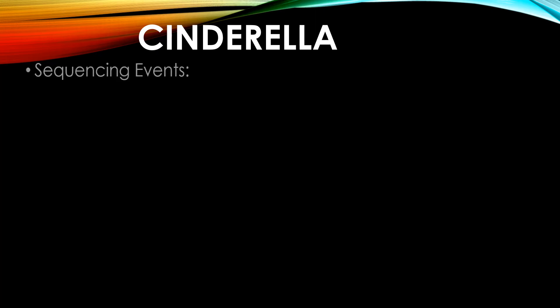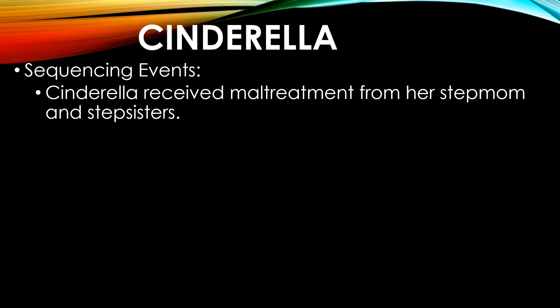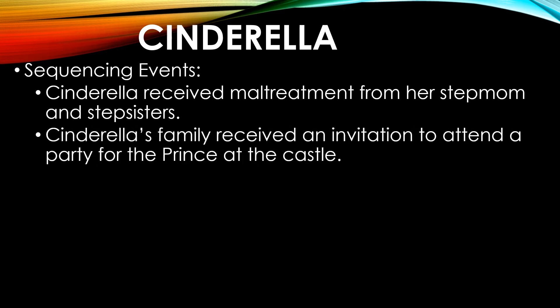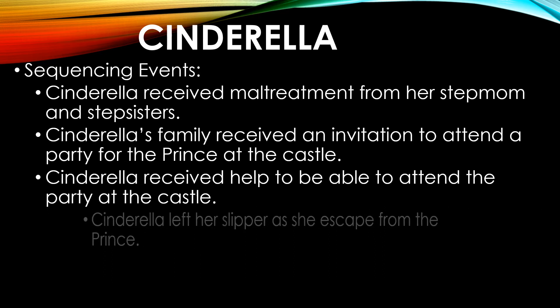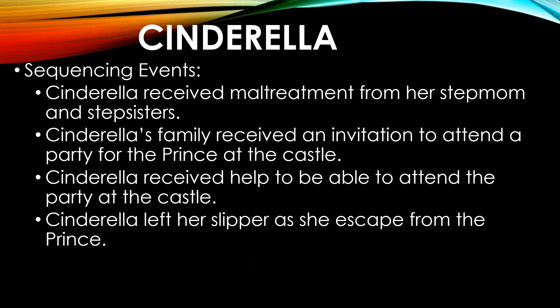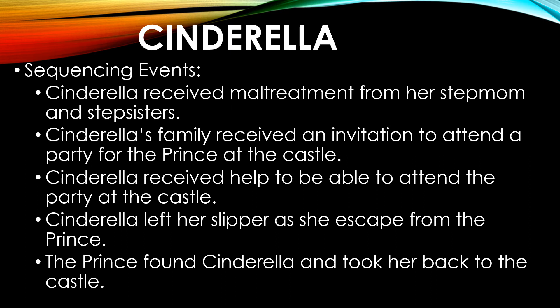If we go back to the story Cinderella and the events given there, we can properly arrange them to make the story understandable. The first event that would have occurred would be that Cinderella received maltreatment from her stepmom and stepsisters. Then the family received an invitation to attend a party for the prince at the castle. Since the stepmom and stepsisters didn't want Cinderella to go to the party, Cinderella received help to be able to attend. But just as the clock struck twelve, Cinderella left her slipper as she escaped from the prince, giving the chance for the prince to look for her and take her back to the castle.